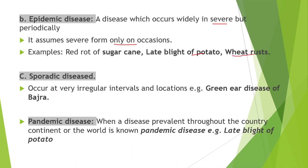Next is sporadic disease: it occurs at very irregular intervals and locations. For example, green ear disease of Bajra. Next is pandemic disease: when a disease is prevalent throughout the country, continent, or the world, it is known as a pandemic disease. For example, late blight of potato.